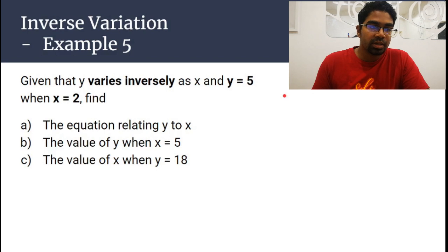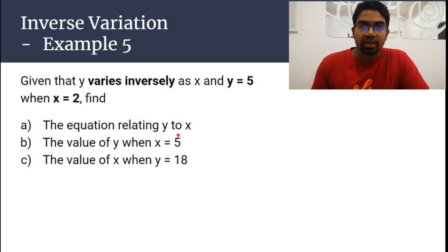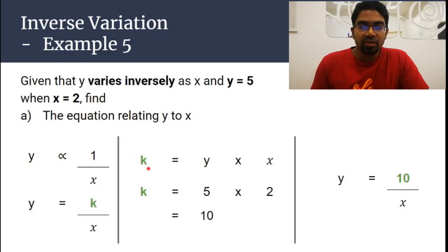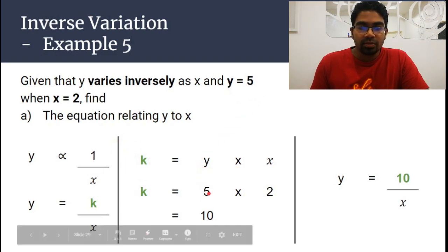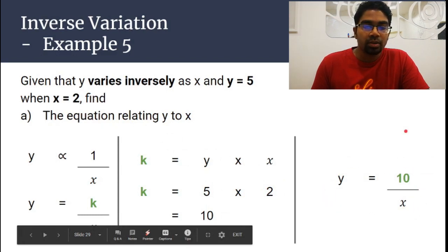Here is another guided example. Given that y varies inversely as x, and y is 5 when x is 2. If the first step is not given, you must know to first find the equation relating y to x before performing any solution. So: y is proportional to 1 over x, which gives y equals k over x. Rearranging, k equals y times x. With y = 5 and x = 2, k = 10. Therefore y equals 10 over x.